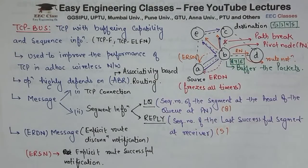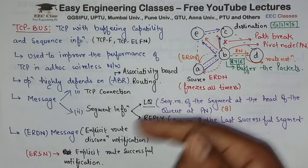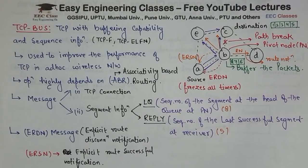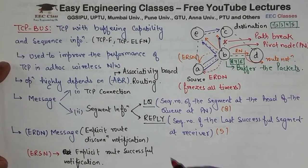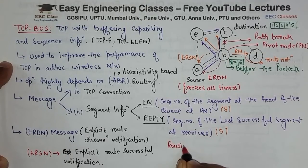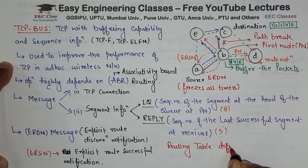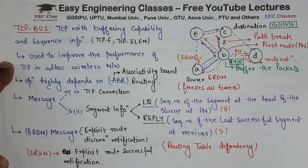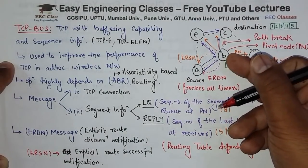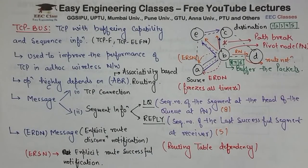Generally kya hota ki buffer mein store nahi hota, toh 8, 7, 6 ko dobara se bhejega — toh woh cheez yahan pe avoid ho rahi hai. Disadvantage thoda sa ye ho gaya hai — it is highly dependent on the routing table, routing table pe is ki bahut zyada dependency hai. And the failure of the intermediate node that buffers the packets may lead to loss of packet and performance degradation. Agar B hi aapka khatam ho jaye — intermediate node — toh problems ho sakti hain. So this is TCP BUS solution.